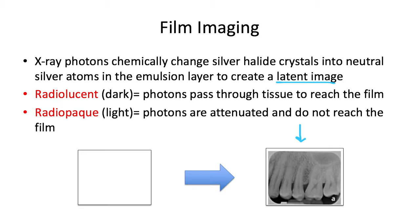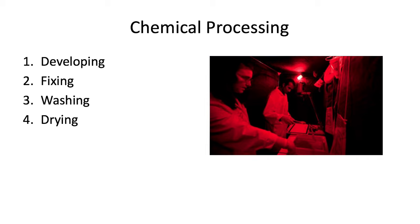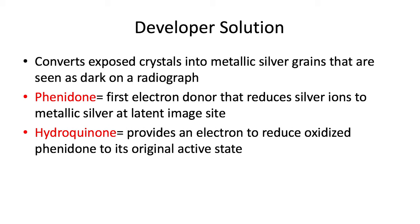Chemical processing is conducted in a special darkroom setting under safe lighting without any light leaks. There are generally four steps: developing — where we make the metallic silver atoms turn black and turn that invisible latent image into a visible image; fixing — where we wash away any unexposed and undeveloped silver grains; washing — where we remove residual chemicals from the previous two steps; and drying — so we can actually read the finished film.